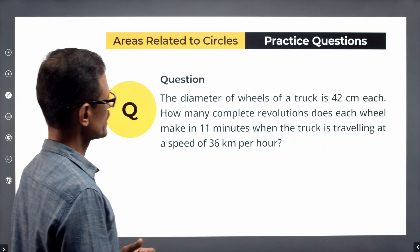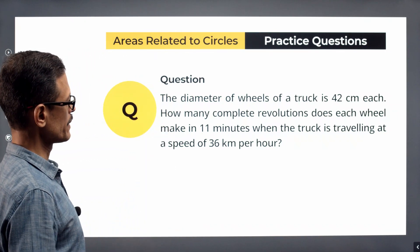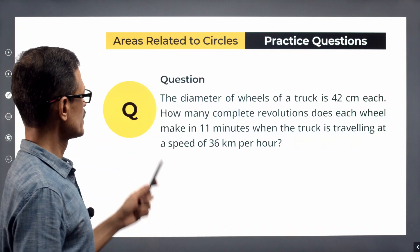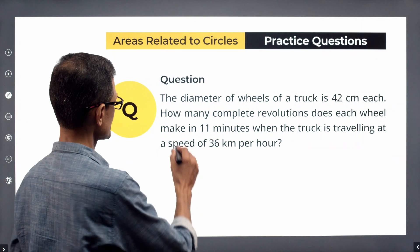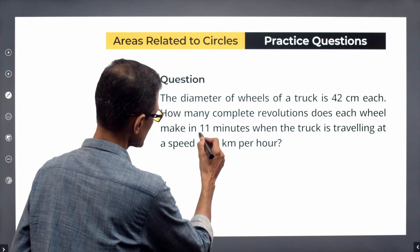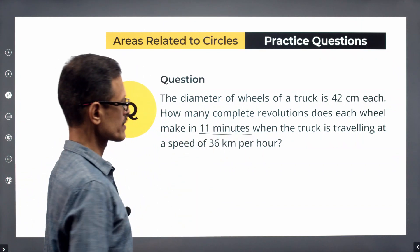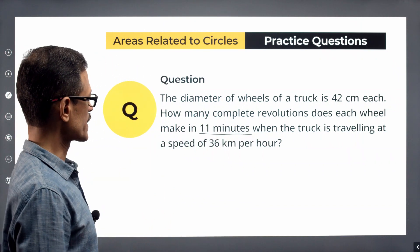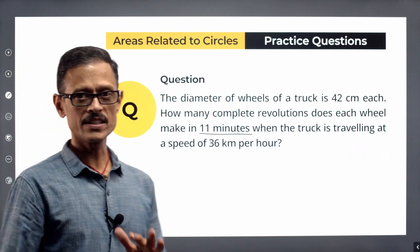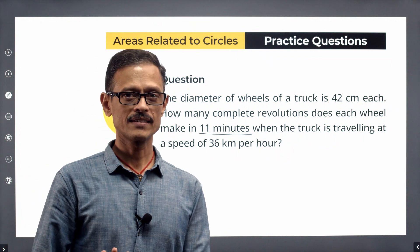The diameter of the wheels of a truck is 42 centimeters each. How many complete revolutions does each wheel make in 11 minutes when the truck is traveling at a speed of 36 kilometers per hour?